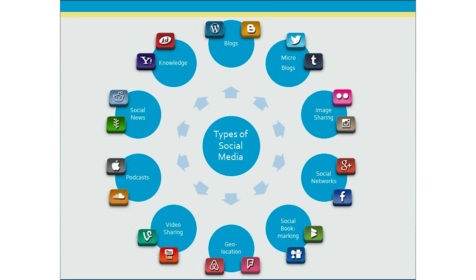Now let's talk about social news. In this category, members submit stories or links to news articles, and other people vote on the value of the content. Two popular examples would be Reddit and NewsVine. And finally, we have knowledge sites, where users post questions and answers and people vote on the best answers. Two examples would be Ask and Yahoo, where people can post questions about anything from technical questions to health issues.